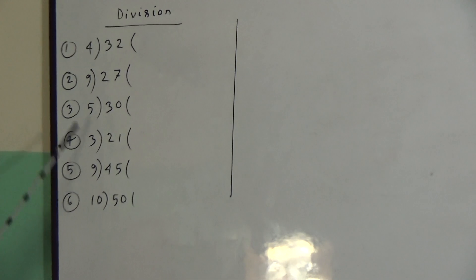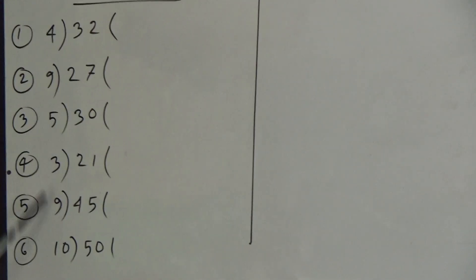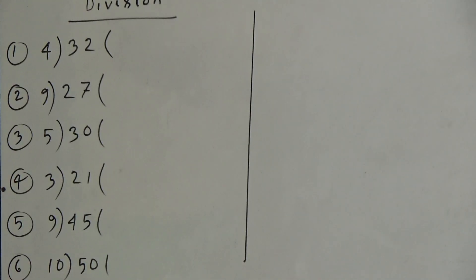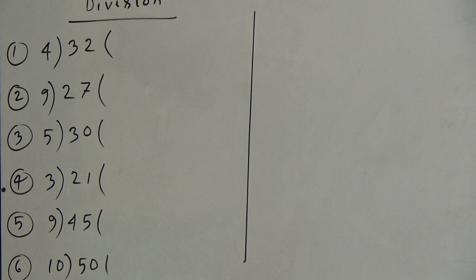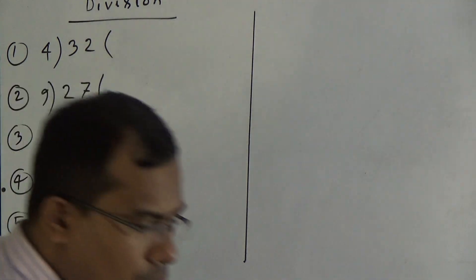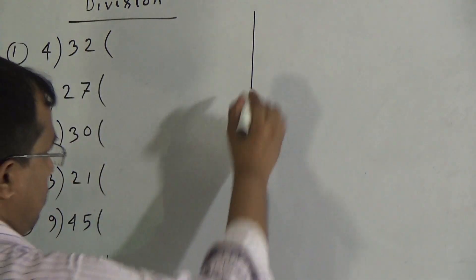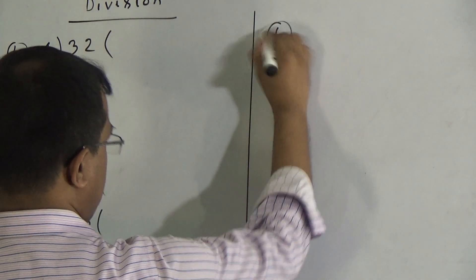Dear students, now we will do some divisions. There are total 6 divisions and I will do all 6 divisions now, and I will give you these 6 divisions as your seat work. Today's seat work number is 17. Now let us start with number 1.